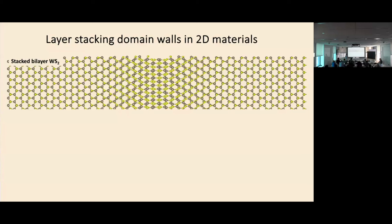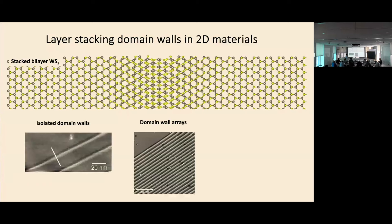When this strain is concentrated, the lattice registration shifts by one atom in a relatively narrow region, forming layer-stacking domain walls. With very little strain, they concentrate in one or very few domain walls. When the strain is relatively large, it realizes a periodical array of domain walls — each domain wall gives one lattice shift, and many shifts form a periodic array.